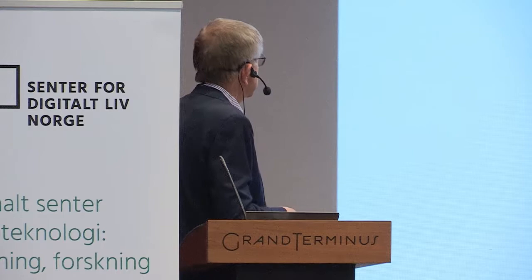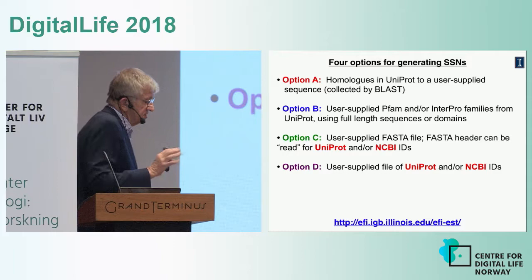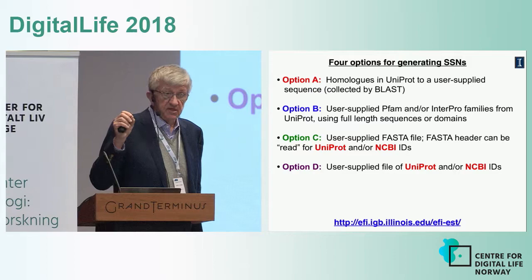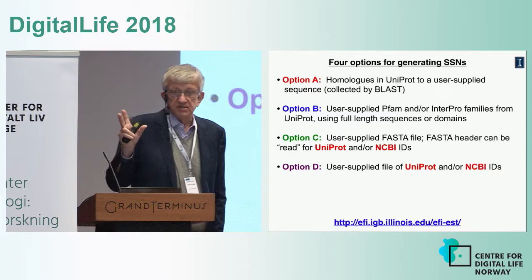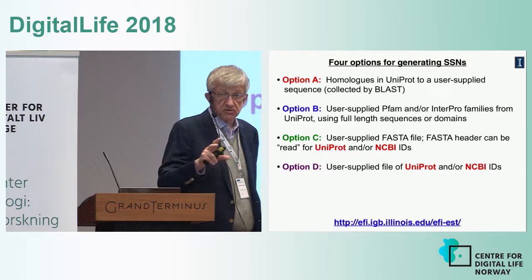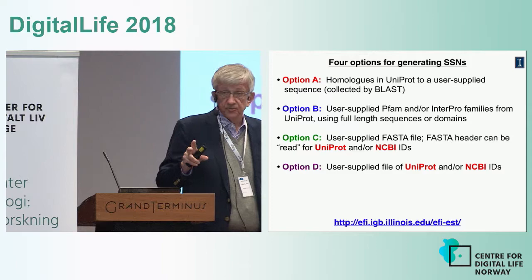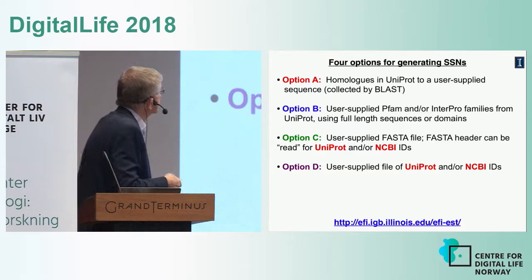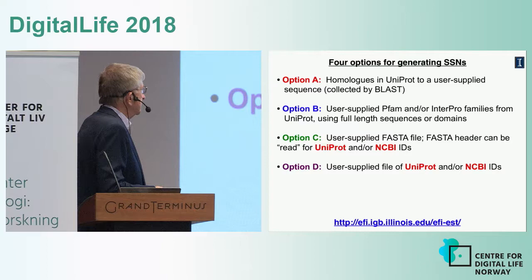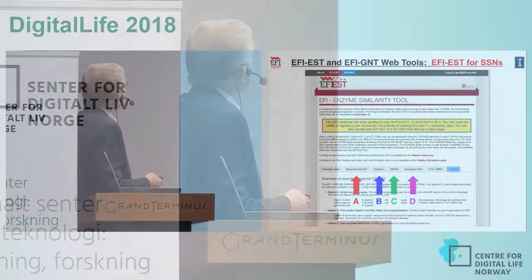You can access this web tool by going to the EFI EST button. We now provide four different options for generating sequence similarity networks: collecting sequences by BLAST against the UniProt database, by specifying PFAM or InterPro families, by providing your own sequences with a FASTA file, or by providing sequence IDs and accession IDs. We use UniProt because the annotations in UniProt can be altered by users, which is impossible with NCBI.